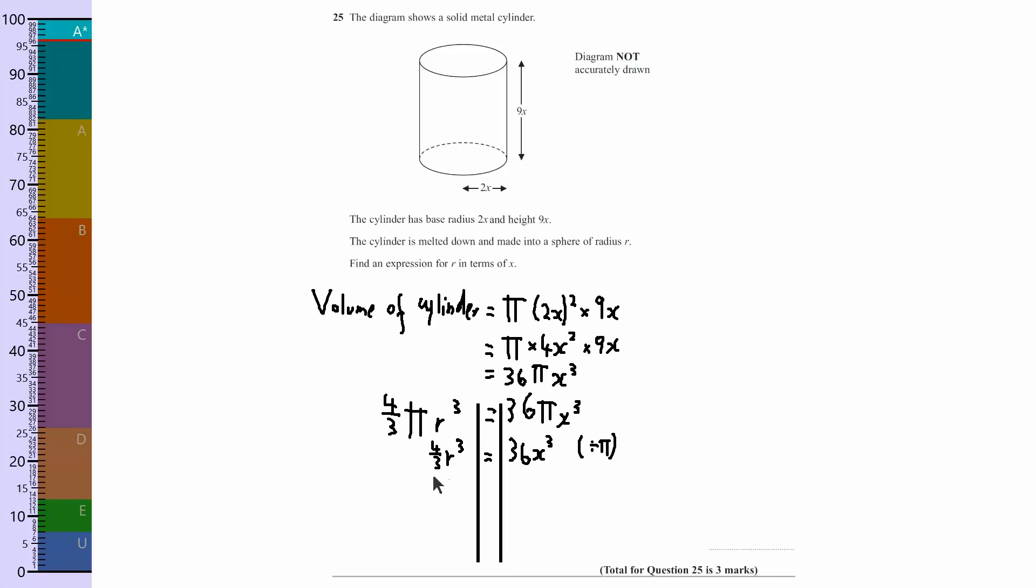Okay, now I need to get rid of the 4 thirds, so what I can do is multiply by 3 and then divide by 4, both sides. So when I multiply by 3 and divide by 4, times by 3, divide by 4 is 27, and that gets rid of that.